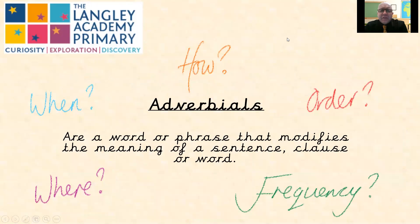Today we're going to look at adverbials. Adverbials are those little phrases within our writing that answer some of the questions that our reader might be having: how is that happening? What order is it happening? How often? When? Where? And so on. So adverbials are a word or a phrase that modifies the meaning of a sentence, clause, or word. Let's look at some examples — hopefully that'll help you understand a little bit better.